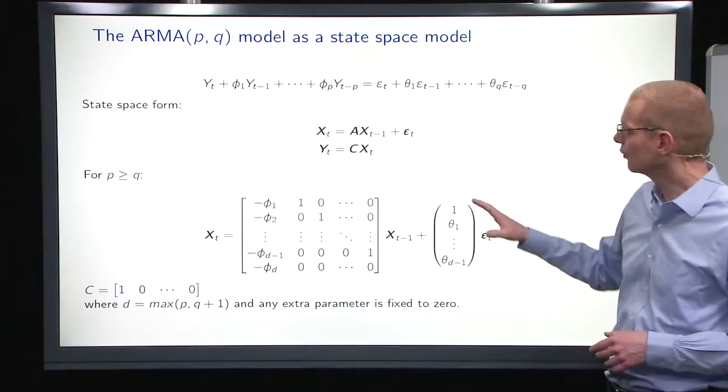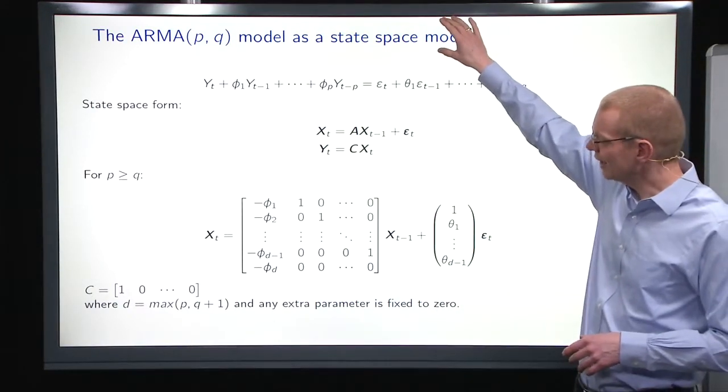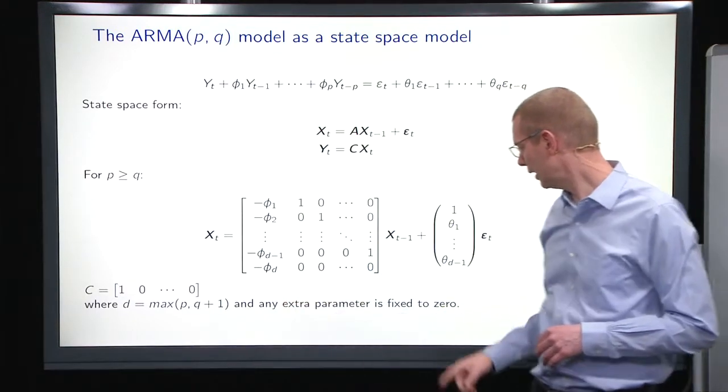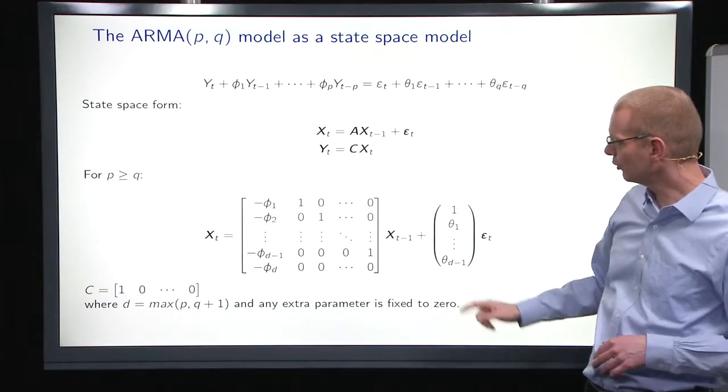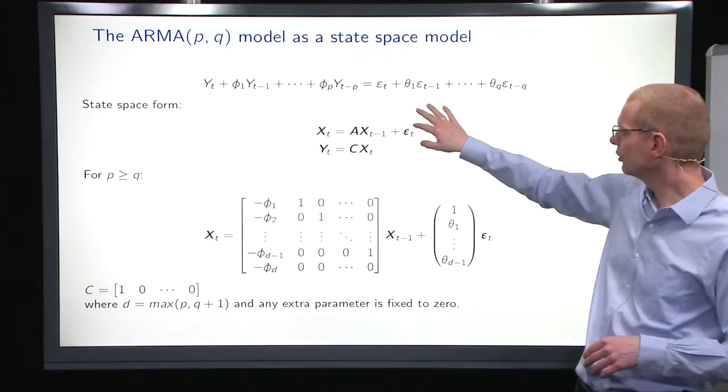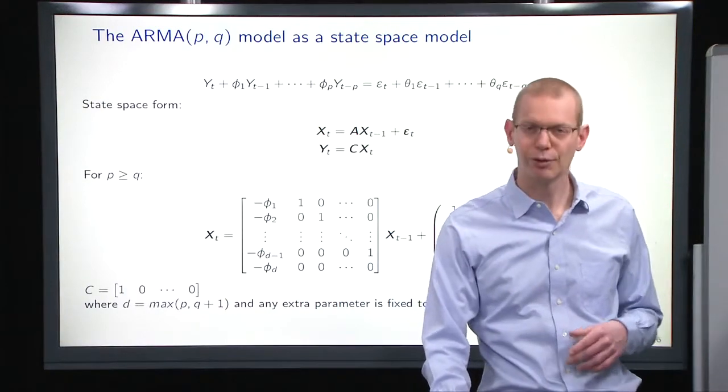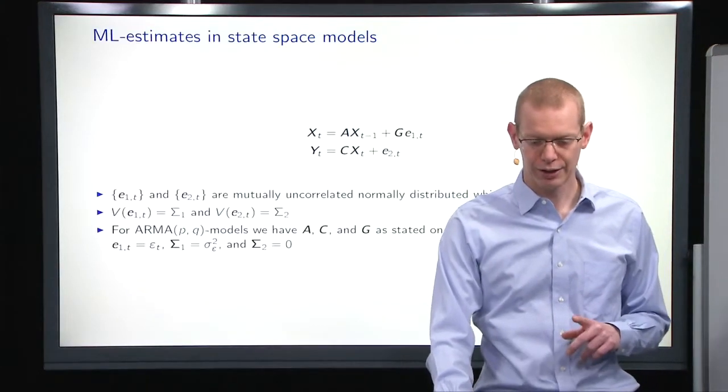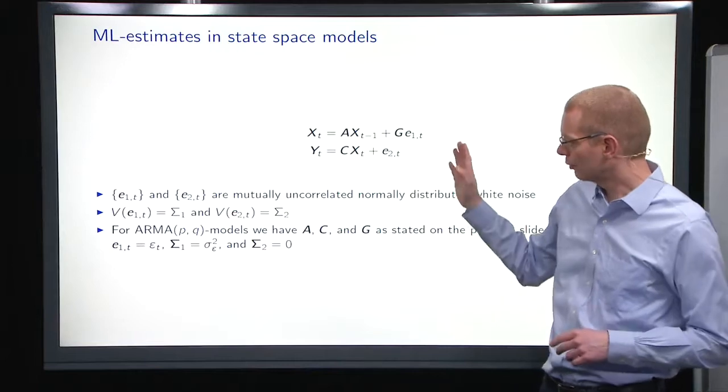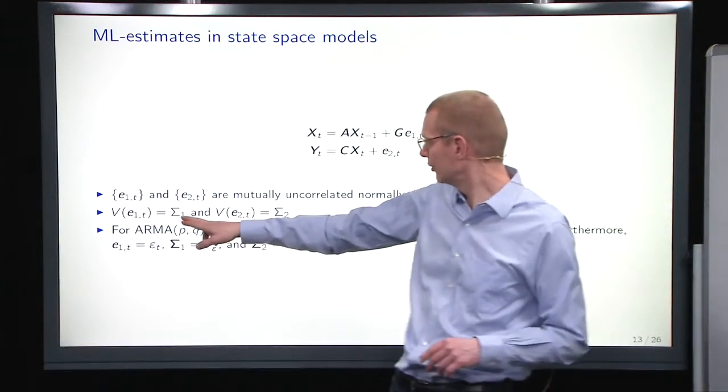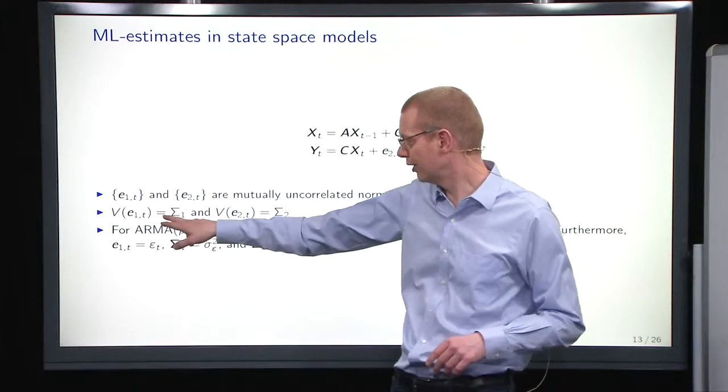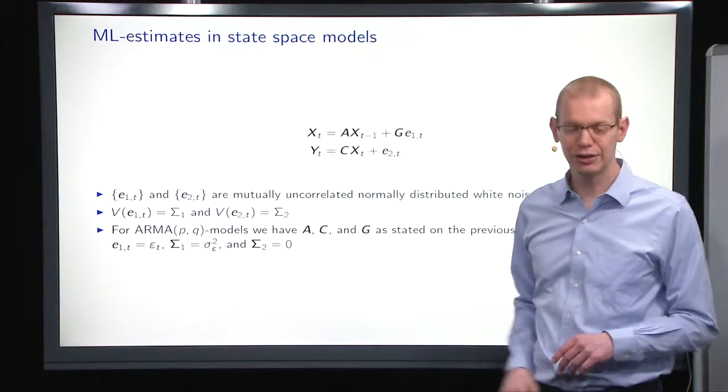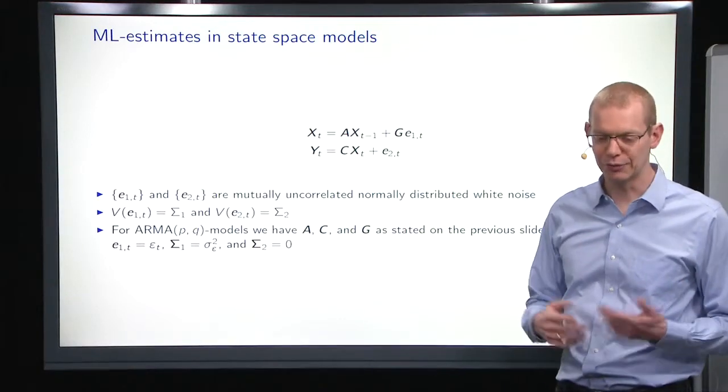Just to recap, we have how to write an ARMA model on a state-space form. We have columns of phi's and thetas here as parameters, and then we also have to estimate the noise, the sigma for the epsilon there. All the others are fixed to zeros once accordingly. In general, we have to estimate both variance for the system noise and the observation noise, and then we have the A, C, and Q matrices that we have to estimate.